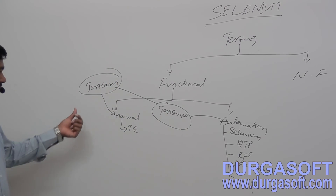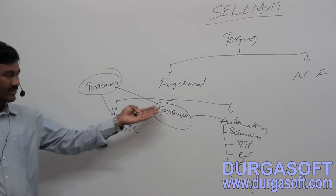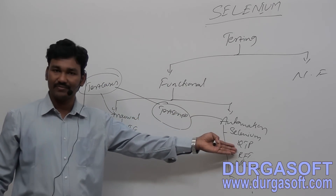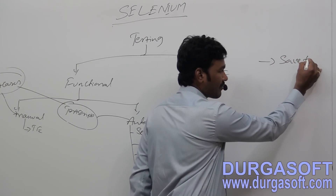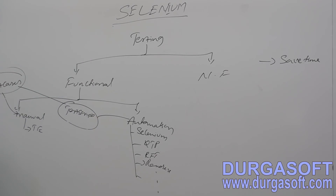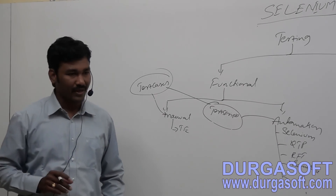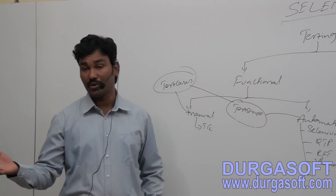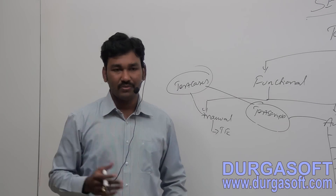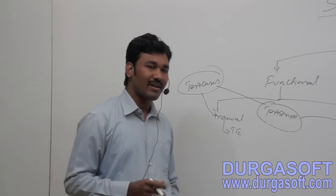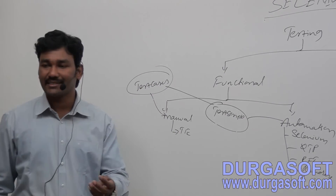You may get one doubt: in Manual Testing we are writing and executing test cases, and in automation we are doing the same activity — converting test cases to scripts and executing them. What is the use? The main advantage is we can save time. For example, I want to go from Kukatpally to Ameerpet. Manually I can go by walk, which takes more time. Or I can use some tools — bike, car, auto, bus. Depending on the requirement you use the vehicle, and that vehicle is nothing but the Automation Tool. With the help of that vehicle I can save time.